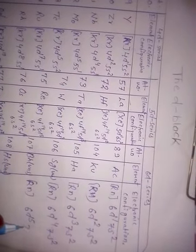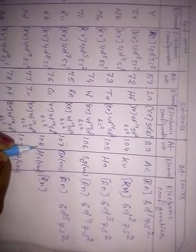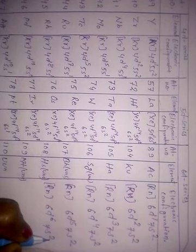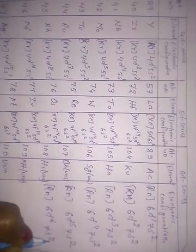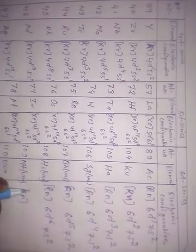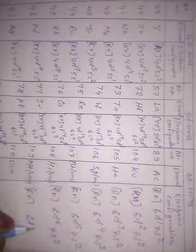Bohrium, atomic number 107, has electronic configuration [Rn] 6D5 7S2. Hassium, atomic number 108, has electronic configuration [Rn] 6D6 7S2. Meitnerium, atomic number 109, has electronic configuration [Rn] 6D7 7S2.